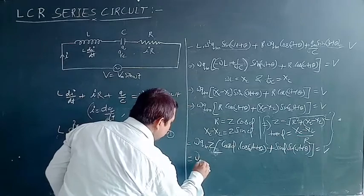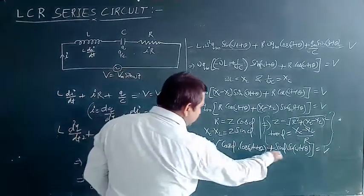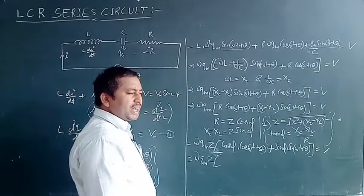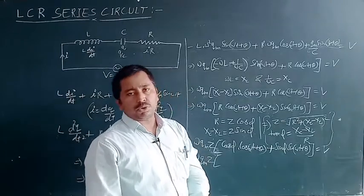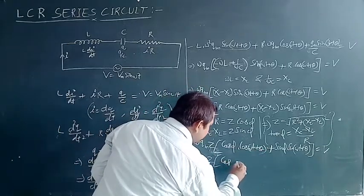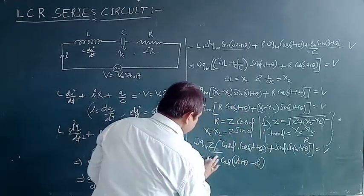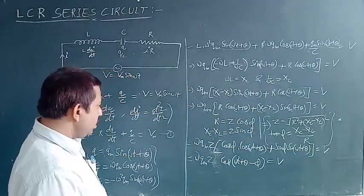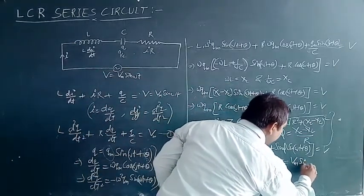The expression cosφ·cos(ωt + θ) + sinφ·sin(ωt + θ) equals cos(ωt + θ − φ), using the identity cos(A − B) = cosA·cosB + sinA·sinB, and noting that cos(−θ) = cosθ. So we get ω·qm·Z·cos(ωt + θ − φ) = V. Since V = Vm·sin(ωt), we must convert the cosine to sine for comparison.